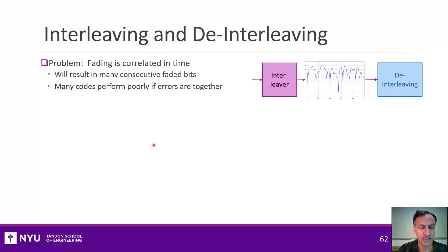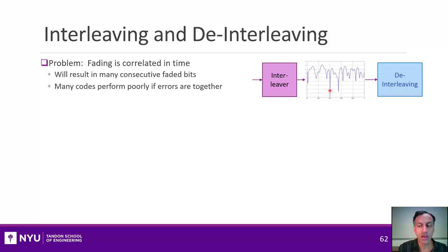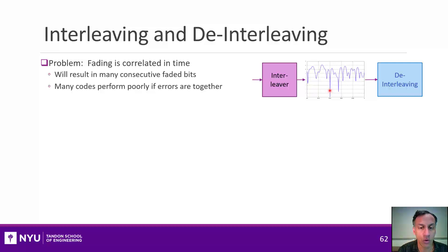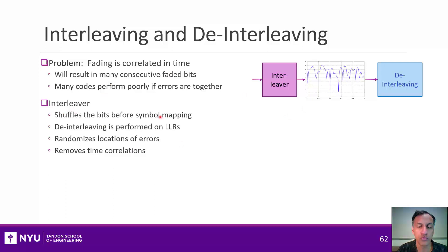Interleaving and de-interleaving is also a pretty easy block. Imagine a channel that is varying slowly over a block — when there's a deep fade, it will knock out bits. With coding that's normally not a problem, but if you do your code without interleaving, it will knock out a whole bunch of bits that are together in a codeword. That hurts many types of codes, particularly convolutional codes, which perform very badly in that scenario. They'd rather have errors randomized out through the whole process. So you shuffle the bits before mapping to symbols, then de-interleave the LLRs when you get them out, which randomizes the error locations. That trick will actually buy you quite a bit.